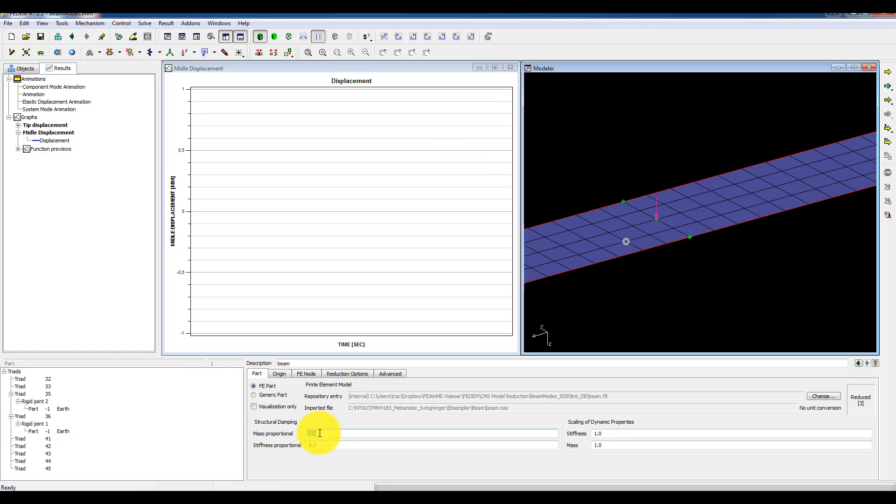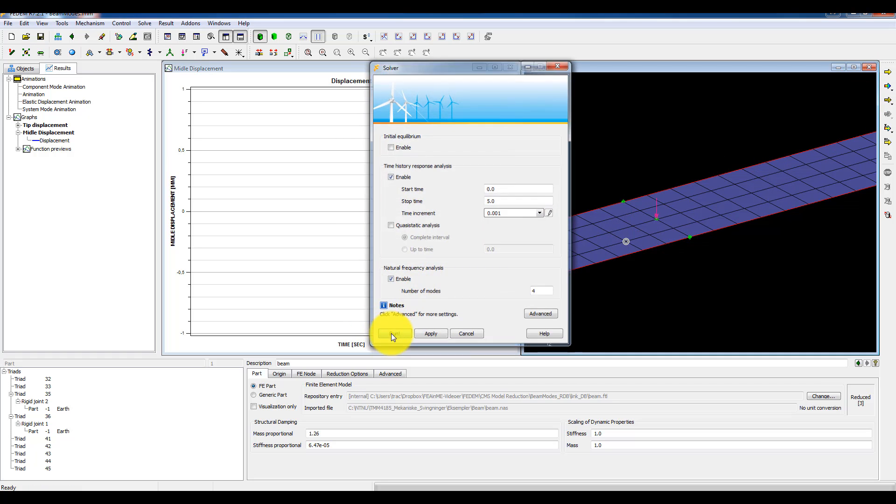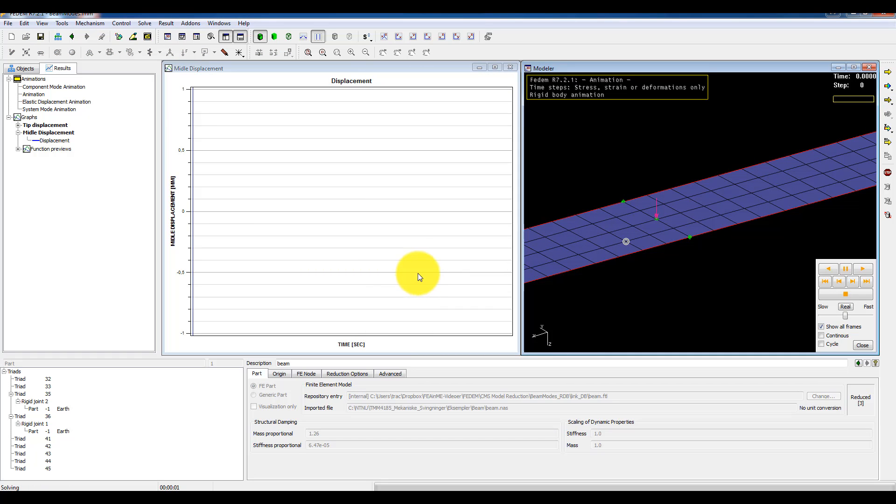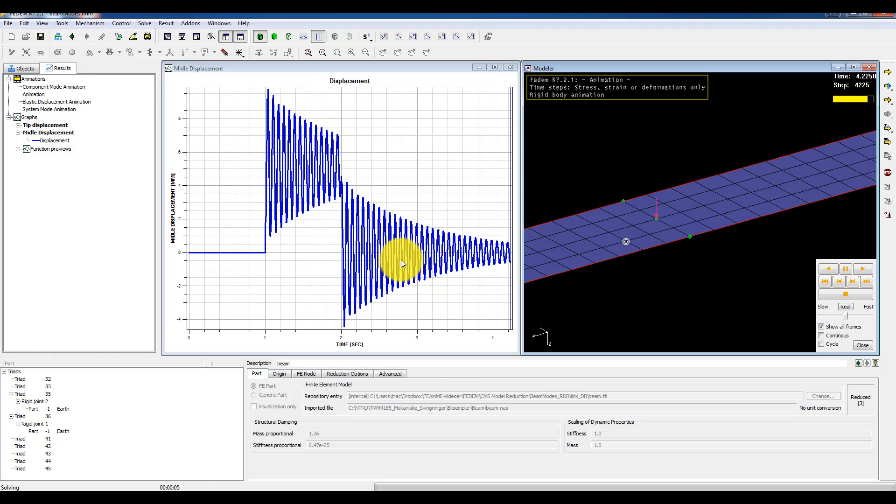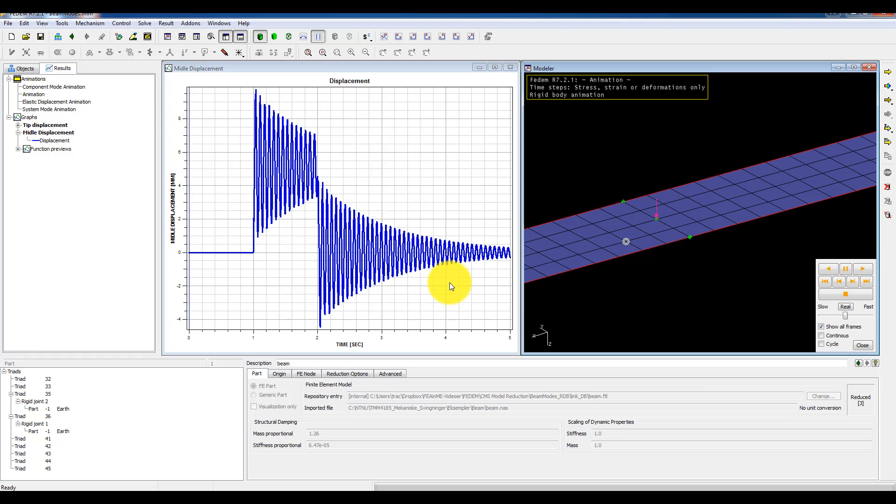So the mass proportional was roughly 1.26, and the stiffness proportional damping was 6.47 times 10 to the power of minus 5. Then we can run the simulation once more. And there we are. Now we have a damped vibration.